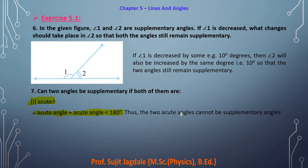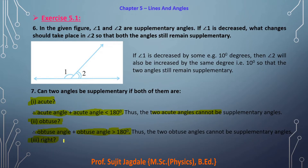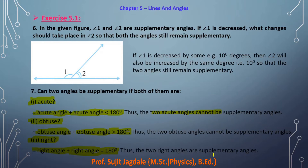If both angles are obtuse, again no — they are not supplementary, because obtuse means greater than 90 degrees, and adding two obtuse angles gives a sum greater than 180 degrees. For the third condition — both right angles — right angle means exactly 90 degrees, so 90 plus 90 equals exactly 180 degrees. Therefore two right angles are supplementary.